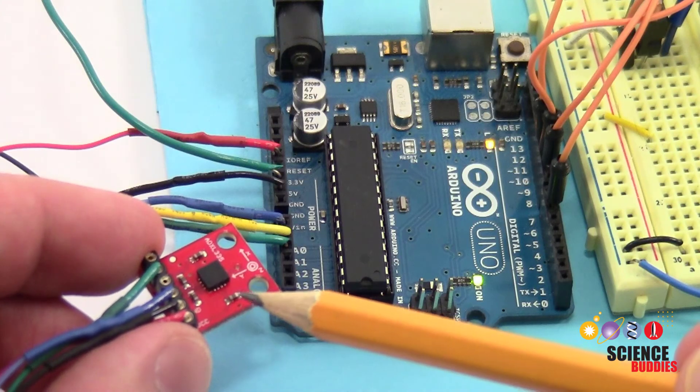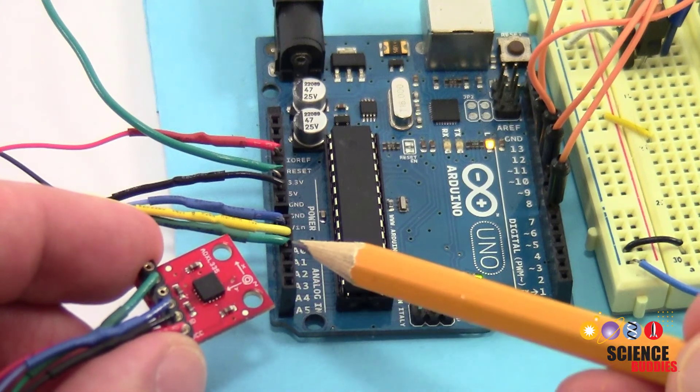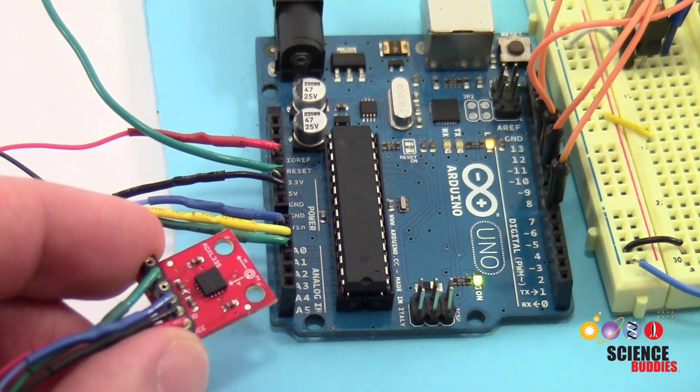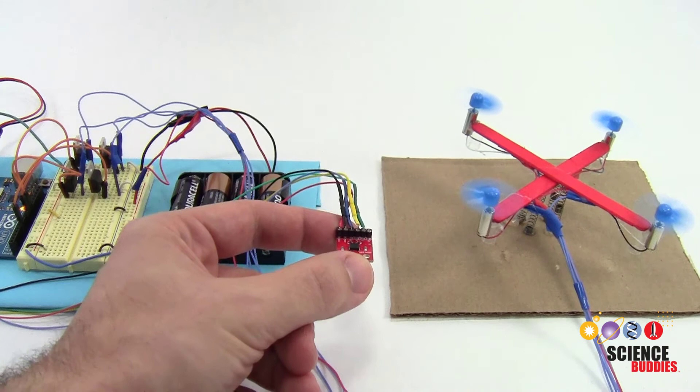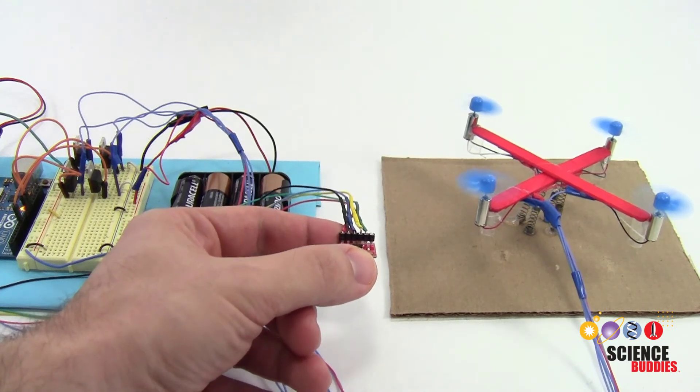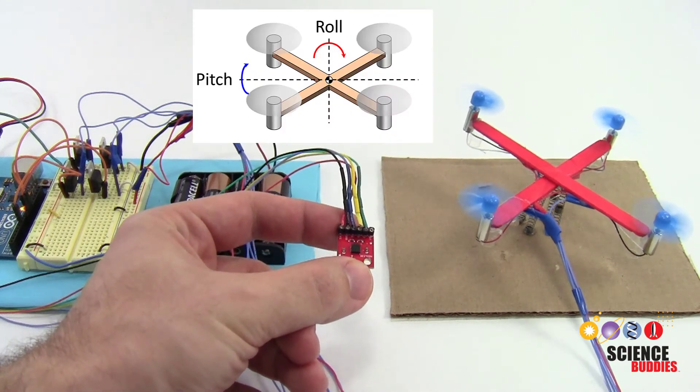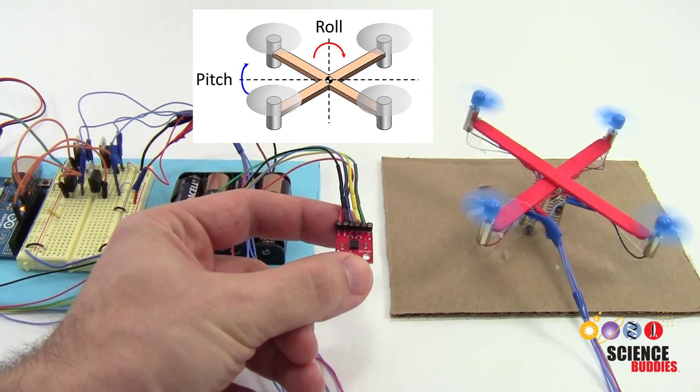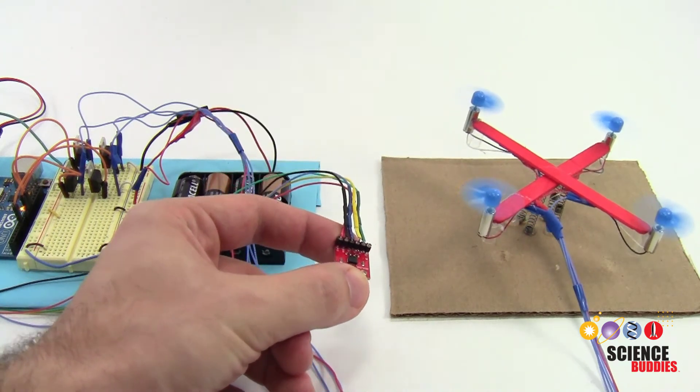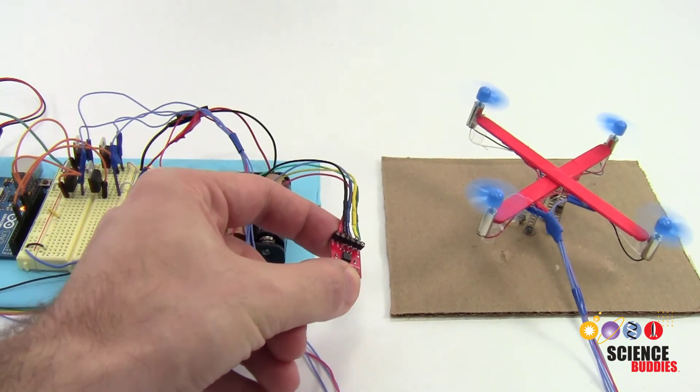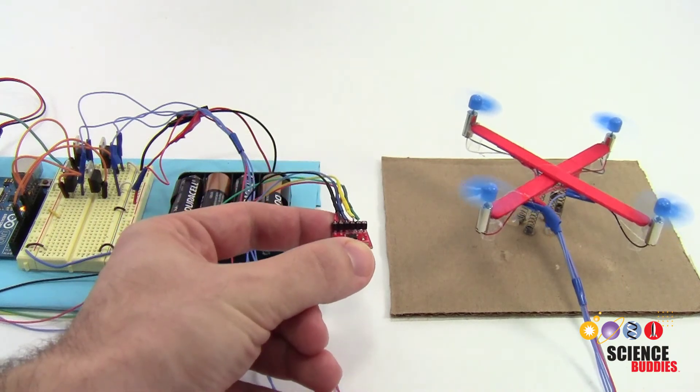In this project, you'll use an accelerometer that interfaces with the analog input pins on the Arduino. As you tilt the accelerometer, the Arduino calculates the pitch or back and forth and roll or side to side angles, and then uses this information to change the speed of the drone's motors to make it tilt in the same direction.